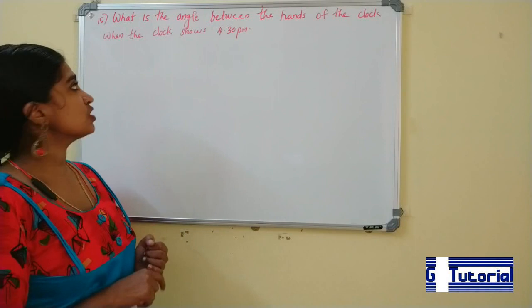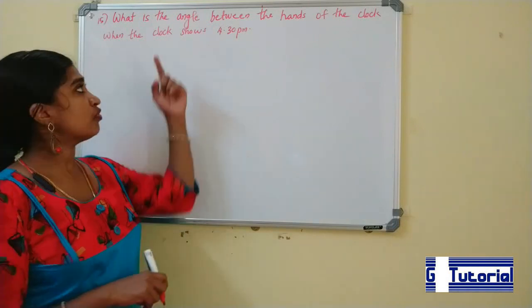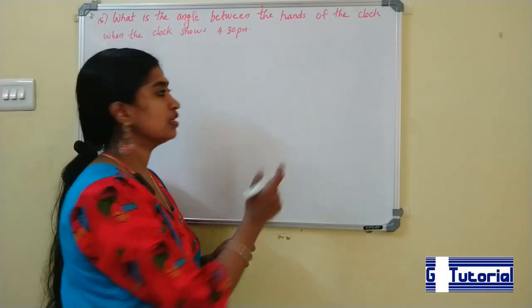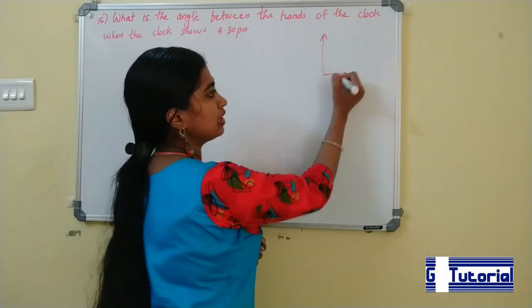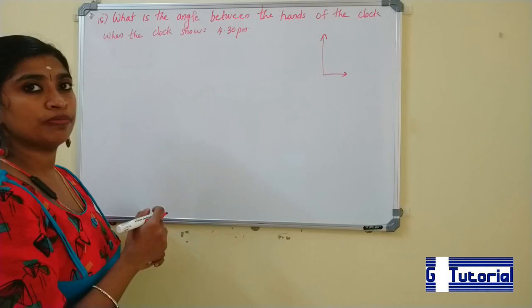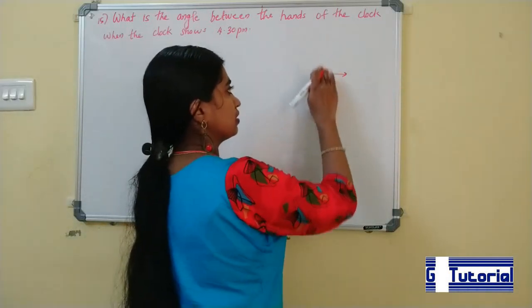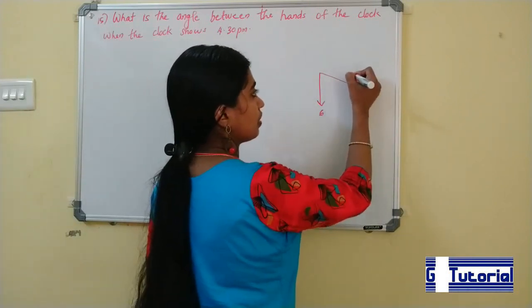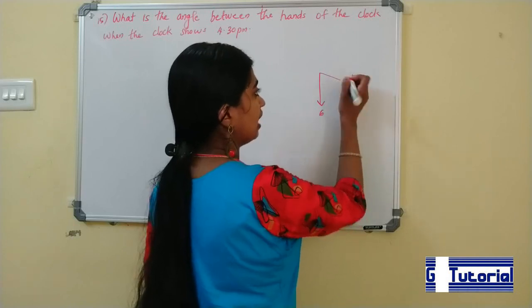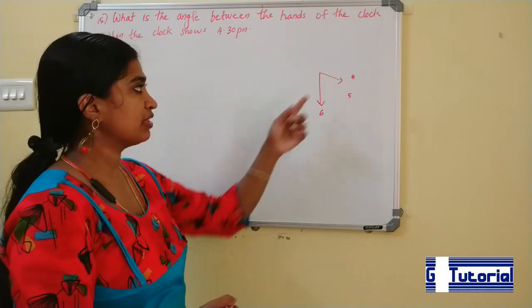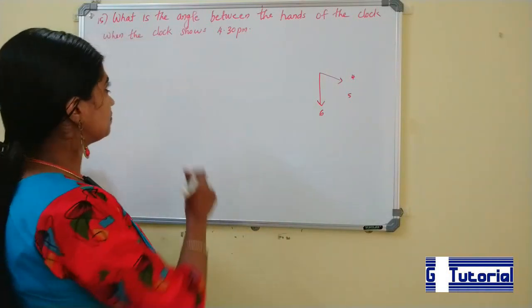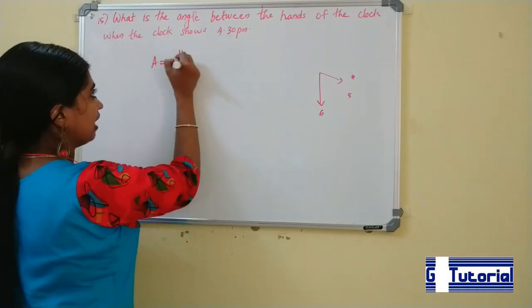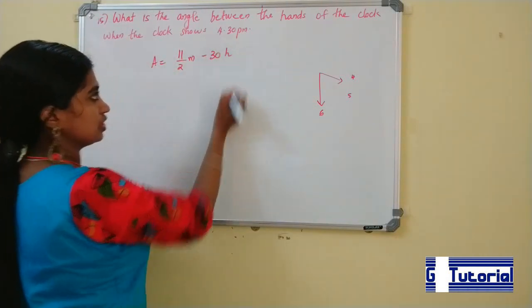Next question. What is the angle between the hands of the clock when the clock shows 4:30 PM? At 4:30 PM, the minute hand is pointing to 6. The formula for the angle between the hour and minute hands is given by: angle = |11/2 × m − 30 × h|.